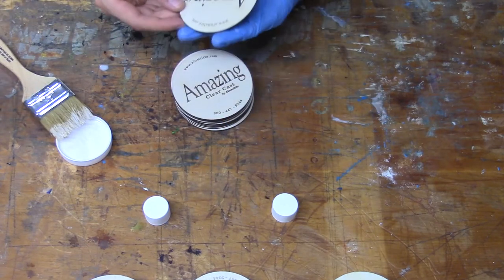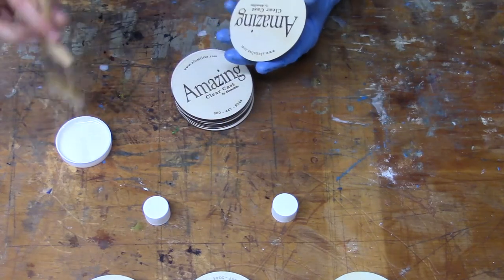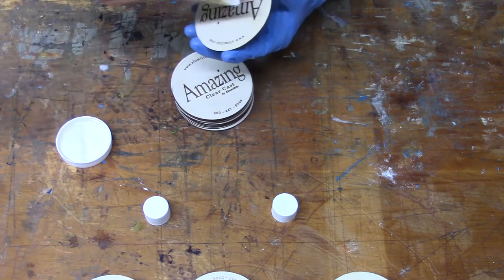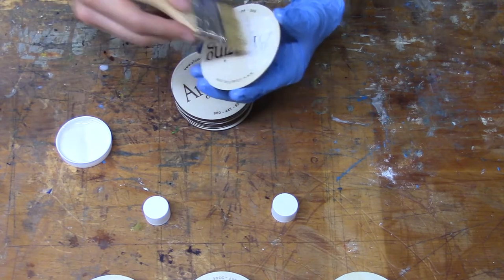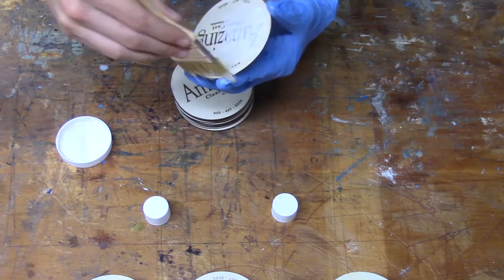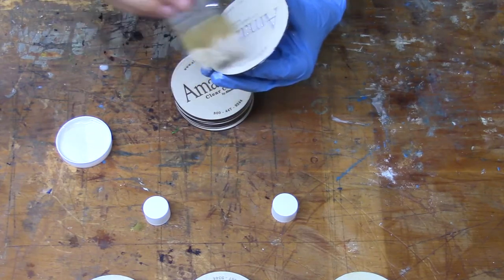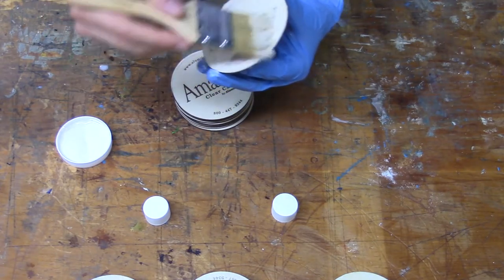Here we're using Mod Podge, which is a general purpose sealer. It goes on white and dries clear so it doesn't affect the clarity of your project. All that's needed is a thin coat, just enough to wet out the surface and seal the porosity.